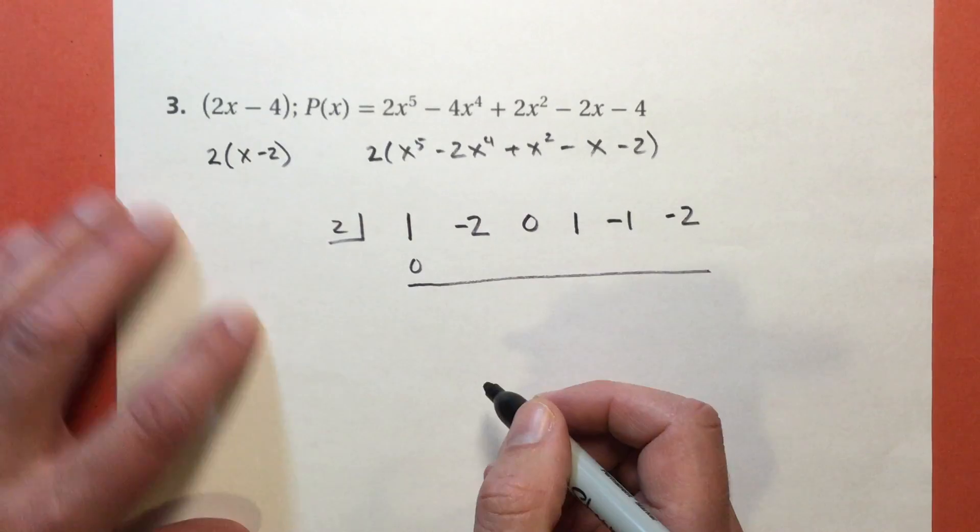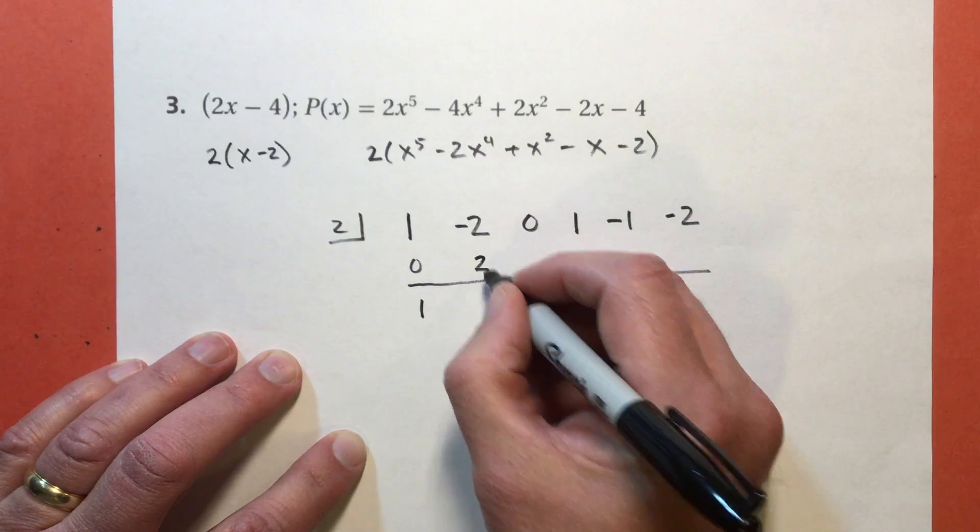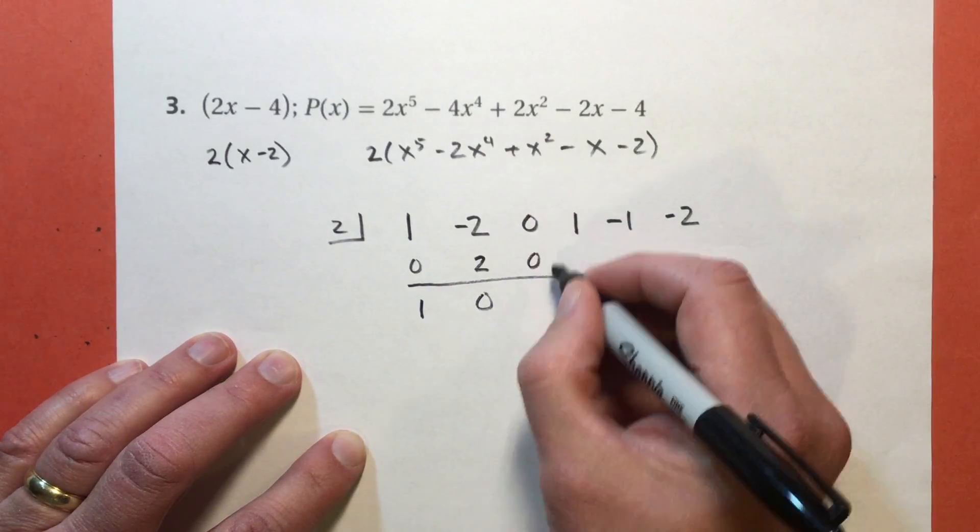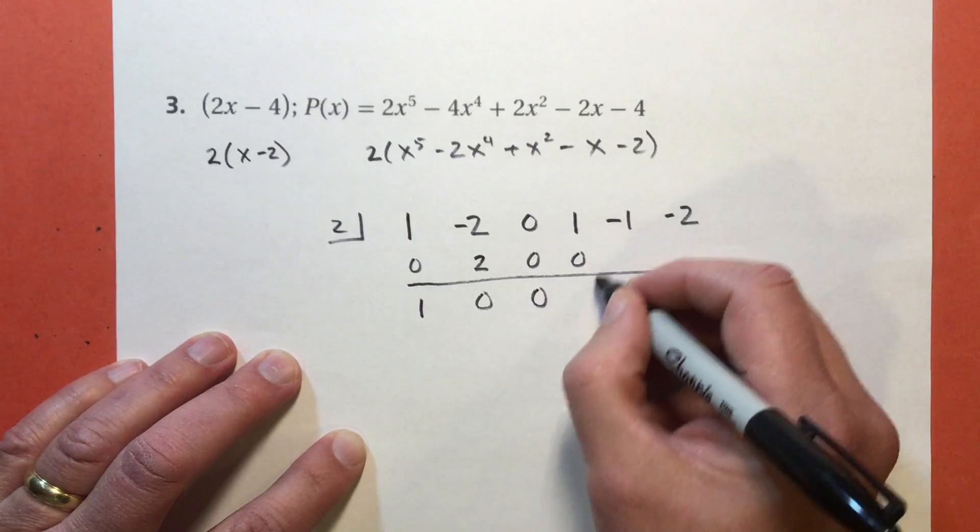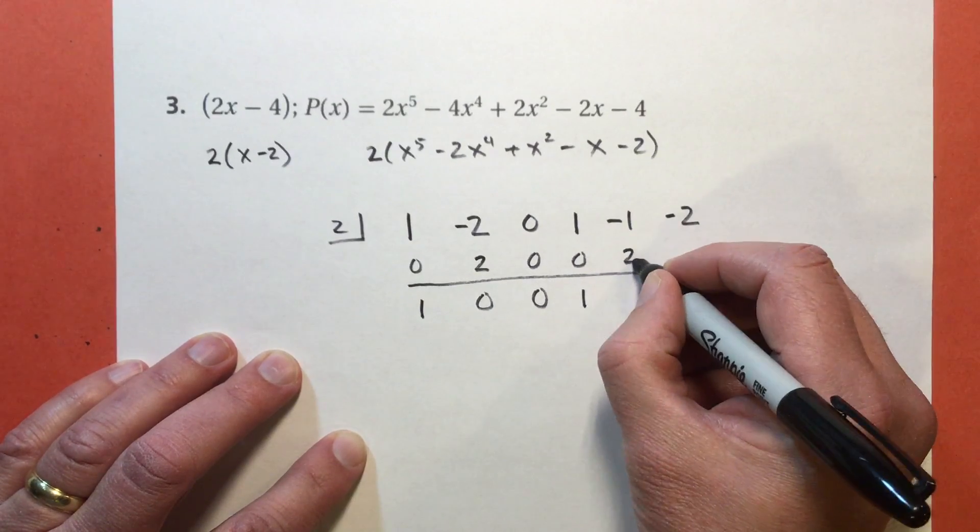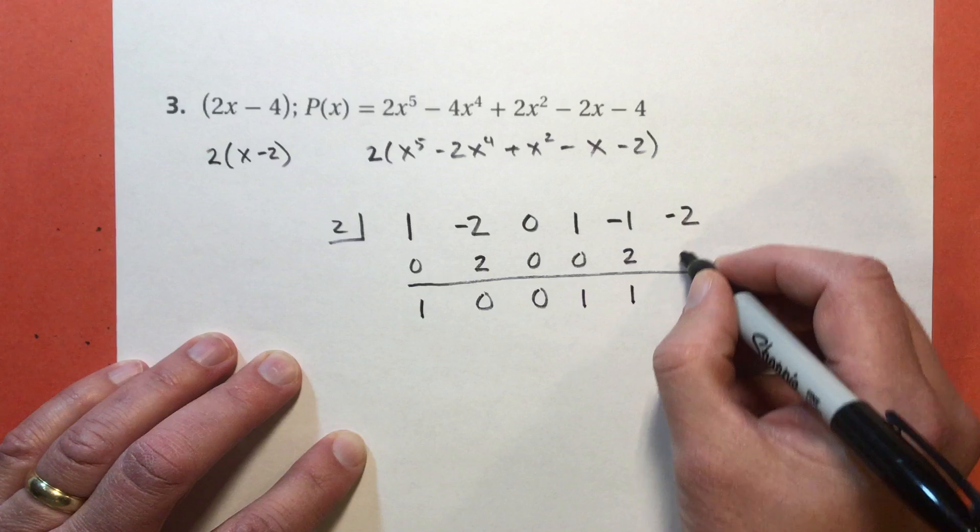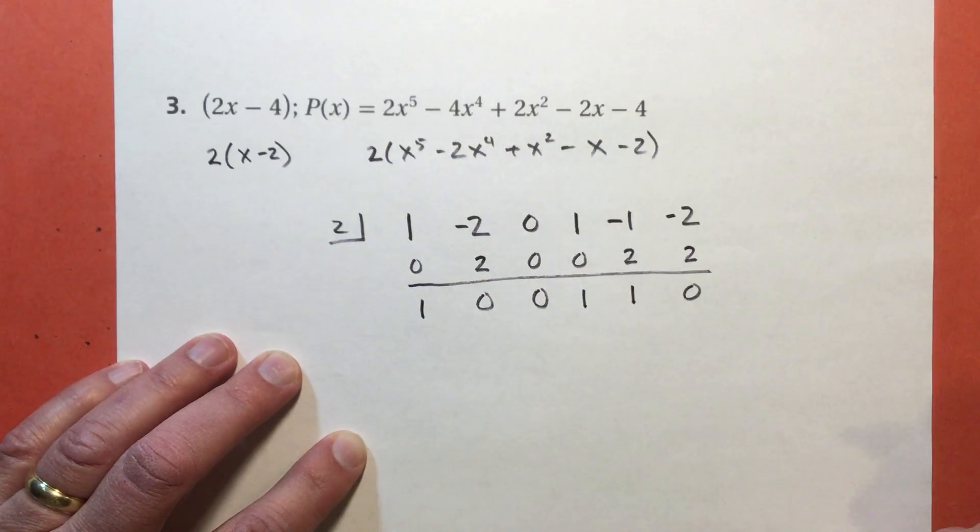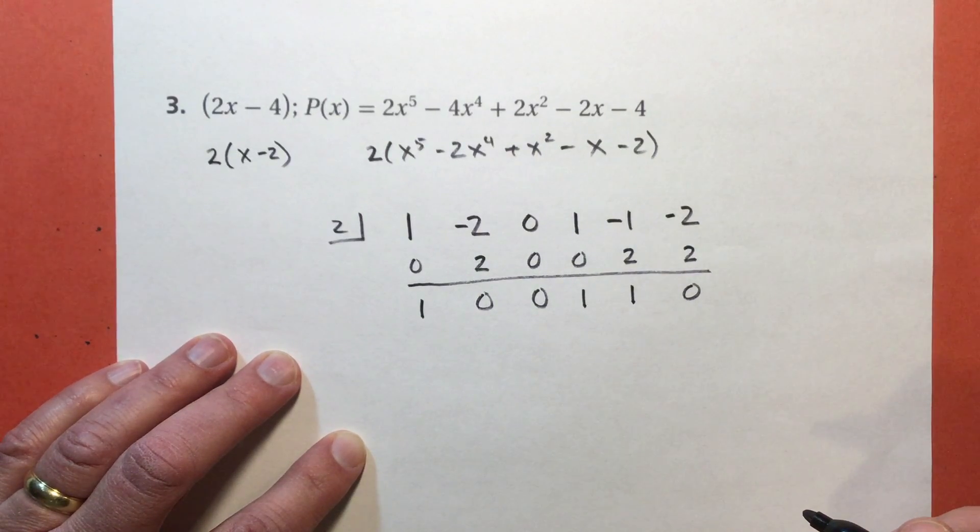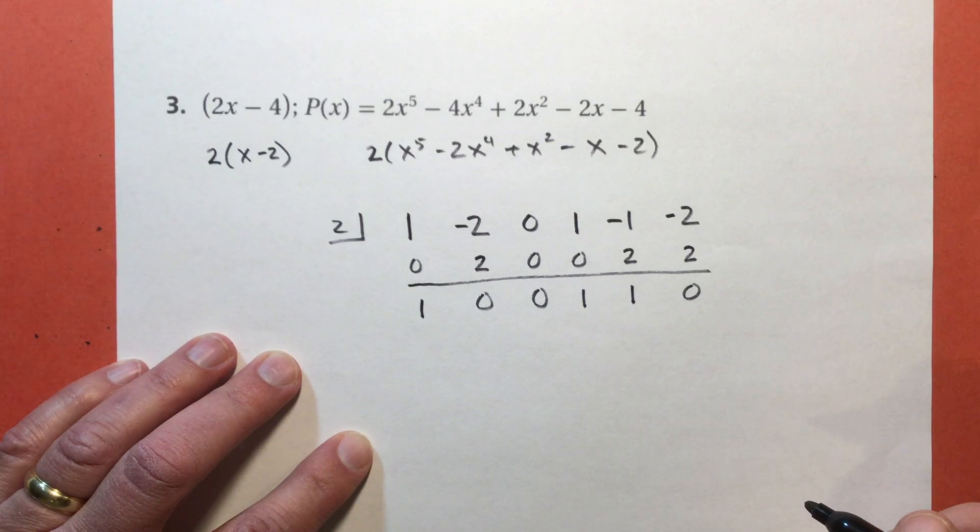We'll go quick with the synthetic division. 1, 2, 0, 0, 0, 0, 1, 2, 1, 2, 0. Pause that and rewind it if it went too fast for you.